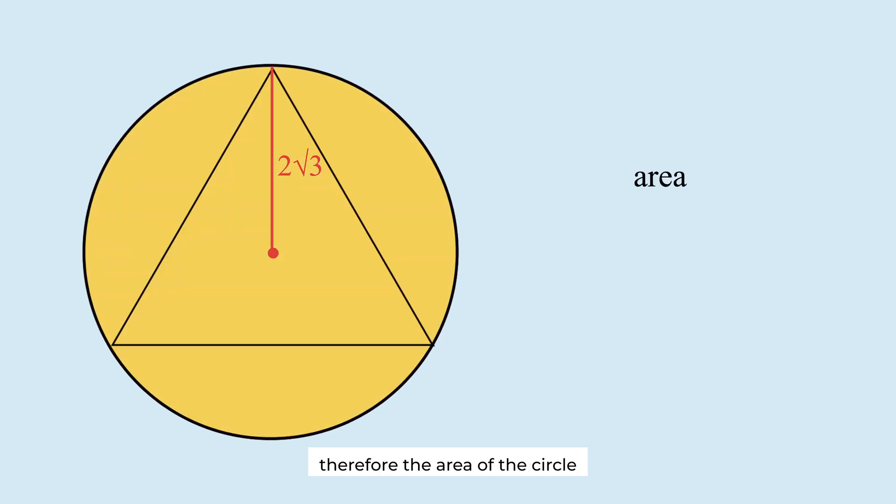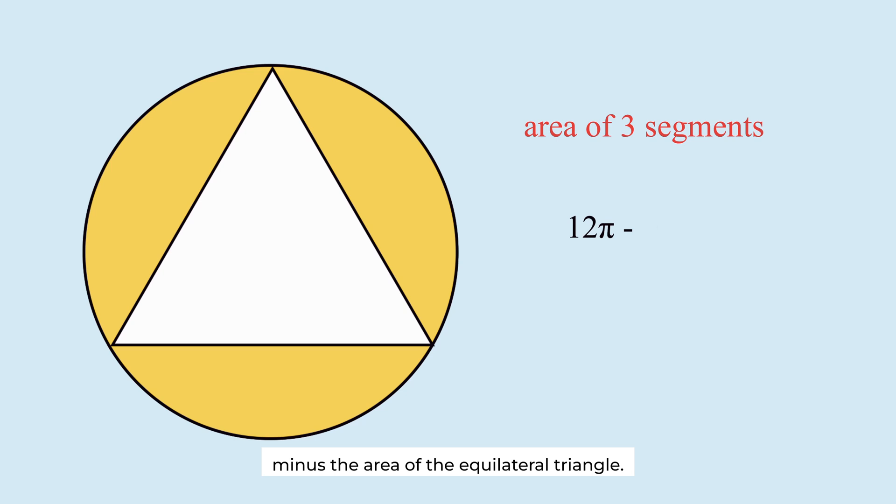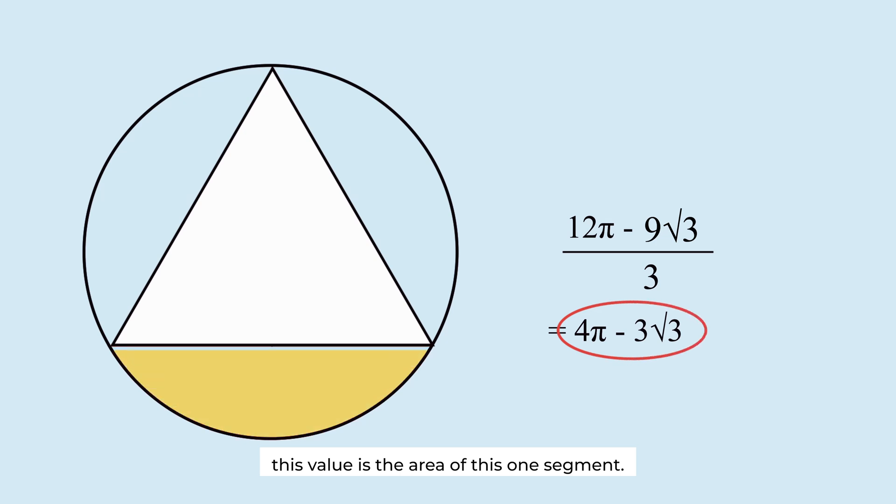Therefore, the area of the circle is this. The area of the three segments is the area of the circle minus the area of the equilateral triangle. Divide by 3. This value is the area of this one segment.